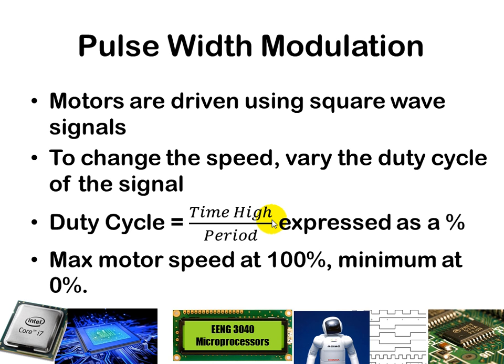Hopefully you have heard about pulse width modulation — you may remember it from your freshman classes when using the Bobots and programming servo motors. Pulse width modulation relies upon the duty cycle of a square wave signal. You output a square wave with a certain period, and the ratio of the time high to the overall period is the duty cycle. The higher the duty cycle — the closer it is to 100% — the faster your motor will run, and the closer it is to 0%, the slower the motor will run.